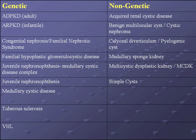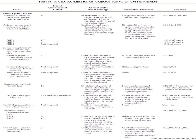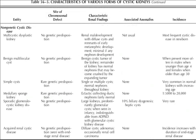Cystic disease can be classified as either genetic or non-genetic. Common genetic diseases include autosomal dominant polycystic kidney disease, von Hippel-Lindau, and tuberous sclerosis. Non-genetic diseases include acquired renal cystic disease, simple cysts, and MCDK. Genetic cystic diseases are most often associated with other anomalies, and genes have been mapped to certain chromosomes. For example, PKD has been mapped to chromosomes 16 and 4, and tuberous sclerosis shares chromosome 16 with PKD1. Non-genetic cystic diseases typically have no associated anomalies.